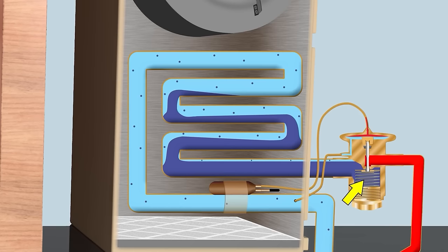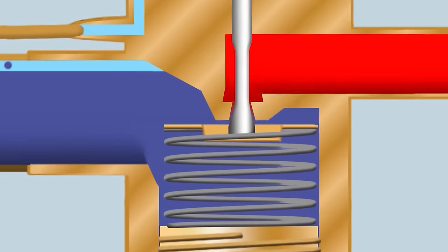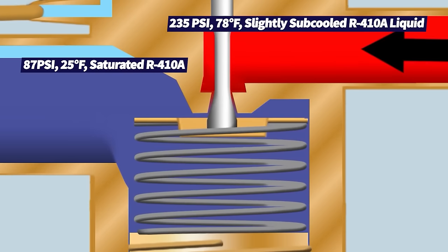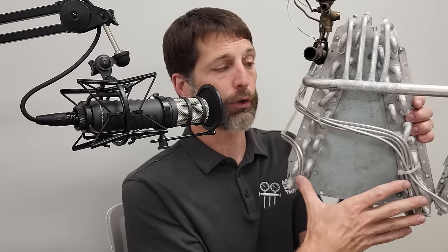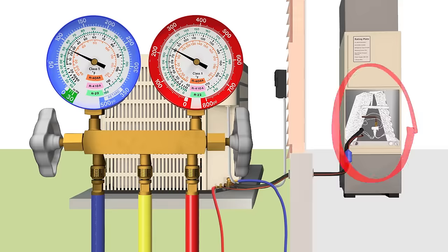If you have a low refrigerant charge and liquid refrigerant is entering the metering device, the restrictor is going to lower the pressure too much. Your saturated refrigerant — a mixture of vapor and liquid — is going to be too low in pressure as it enters the coil, and it's going to end up freezing the entire coil.